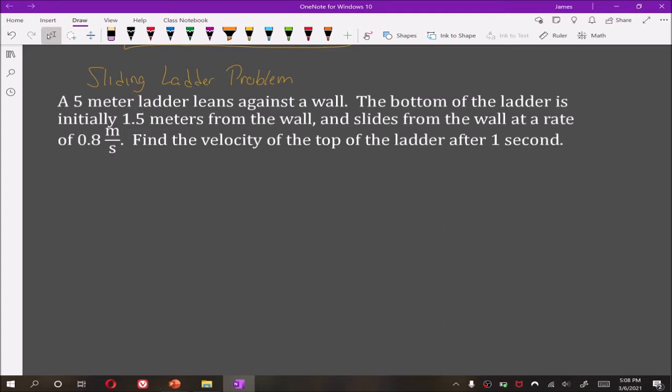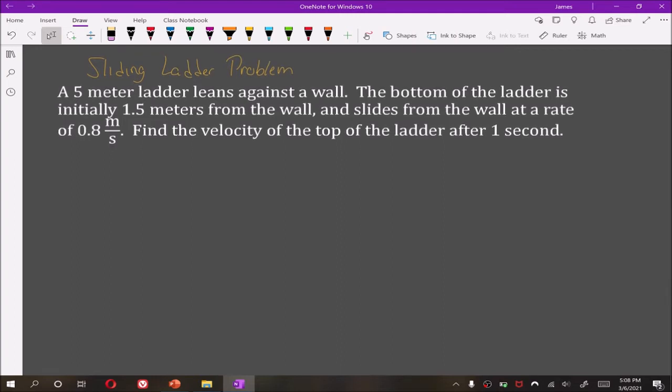So again, let's try and draw out this problem. We'll say this represents the wall here. That's the ground. And we'll say here is our 5 meter ladder. We will call this distance y. So that's the distance the top of the ladder is off the ground. We'll call this distance here x. So that is the distance that the base of the ladder is away from the wall.